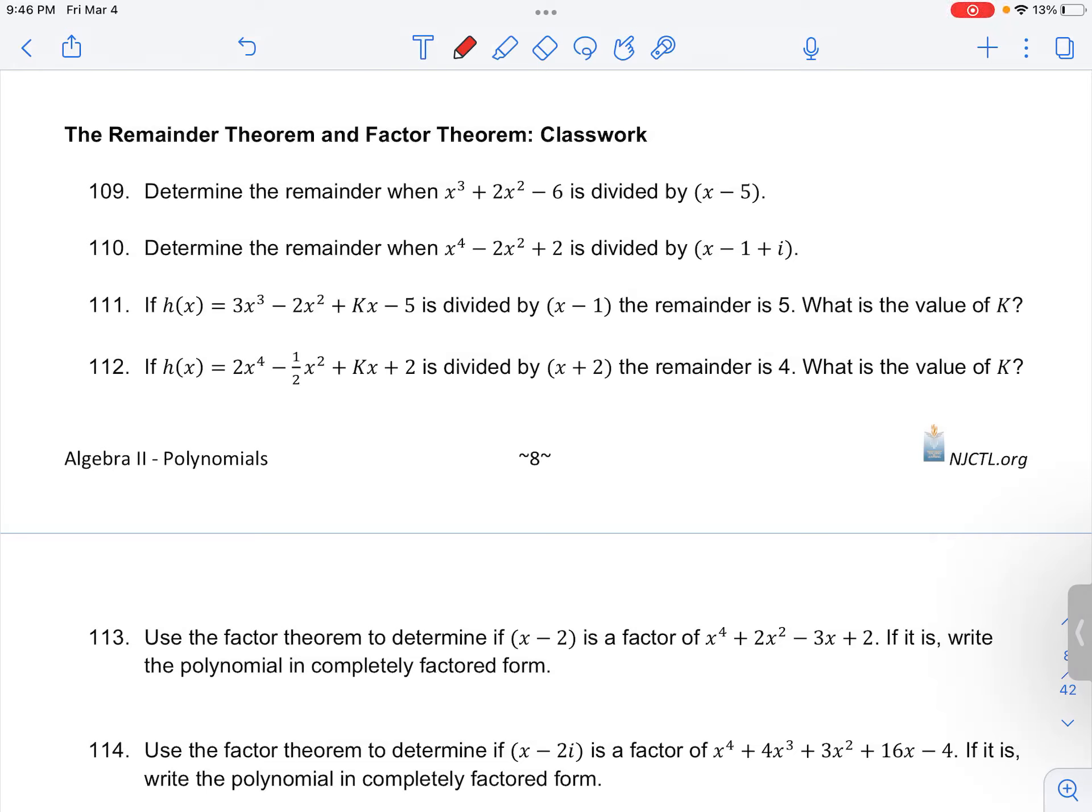Number 109 in your classwork for polynomial functions asks you to determine the remainder when this polynomial is divided by x minus 5. We're going to use the remainder theorem to solve this.